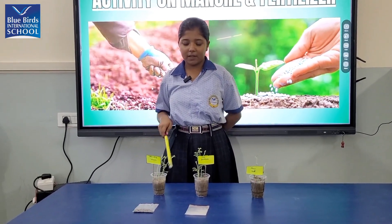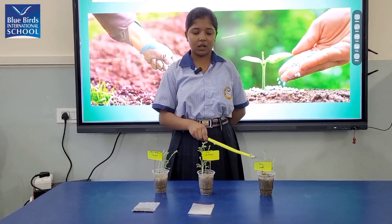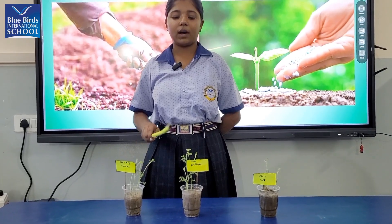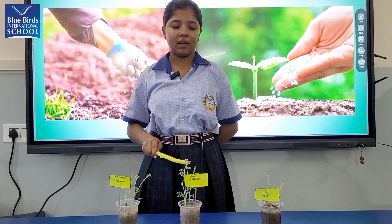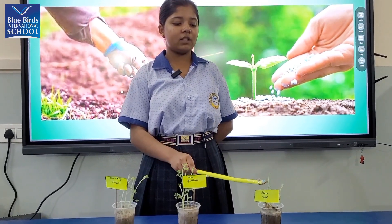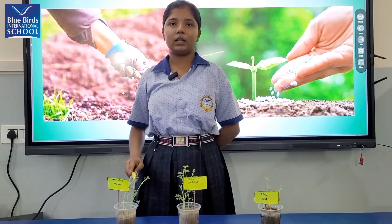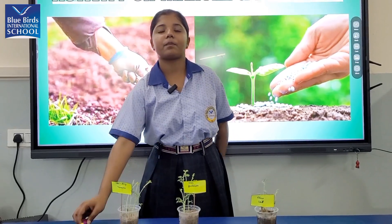You can see the differences in all the cups. Cup A has good growth. Cup B has good growth as well. Cup C — germination happens, but not like the other ones.